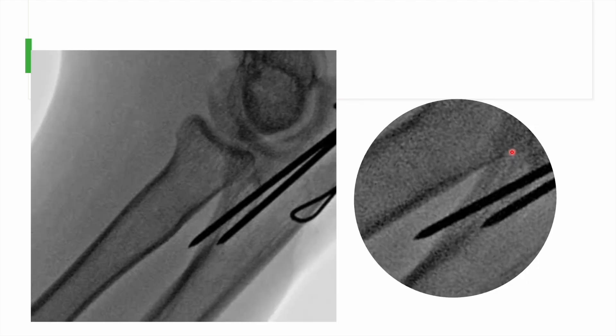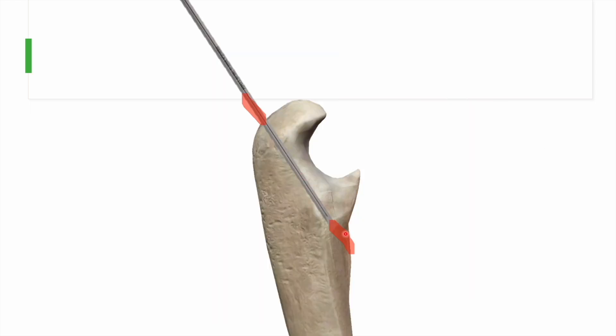Once compression at the fracture site is achieved, check the correct length of the K-wires. If a K-wire is slightly protruding, withdraw it approximately one centimeter back to the cortex. Do not withdraw both K-wires simultaneously — perform this step sequentially, one wire at a time, to avoid losing reduction or tension on the SS wire band.